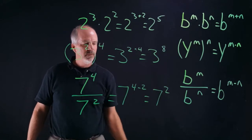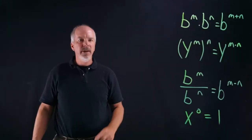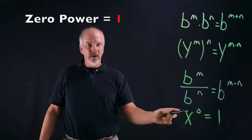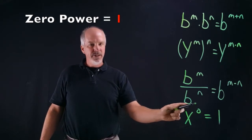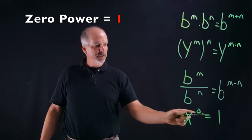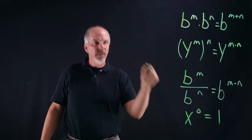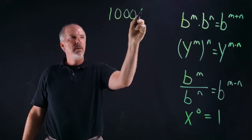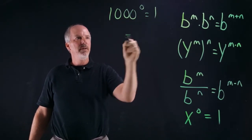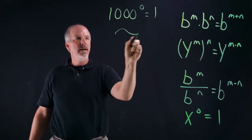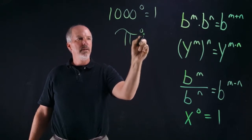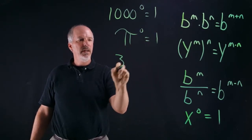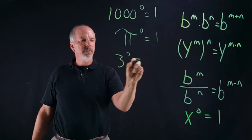This example: anything to the zero power is going to equal one. So you have one thousand to the zero — it's going to equal one. You have pi to the zero — it's going to equal one. You have three to the zero — it's going to equal one.